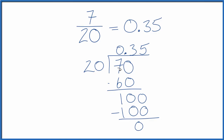So when we divide 7 by 20, we get 0.35. The fraction 7/20 is equal to the decimal 0.35. You can check your work: 0.35 times 20 should give you 7.